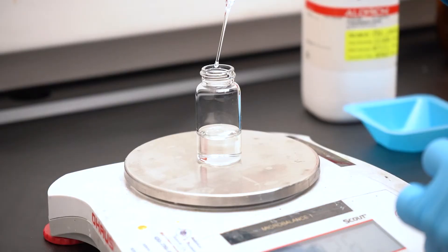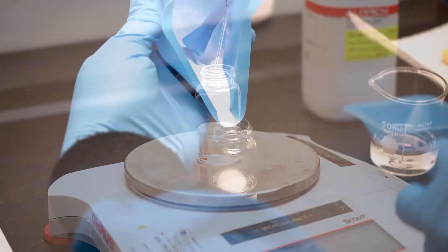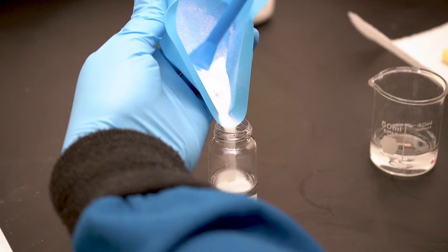So how does electrospinning work? It's all about turning a solution into ultra-thin fibers using electrostatic forces. Your solution is like the starting material and it can be anything from plastic to proteins or even drugs.